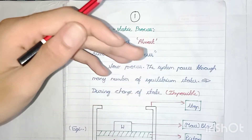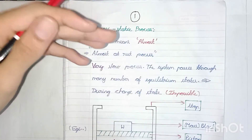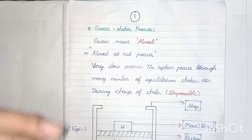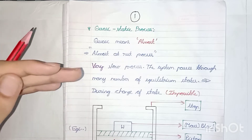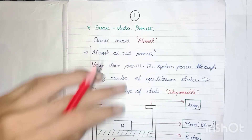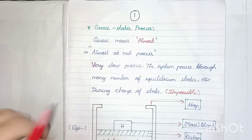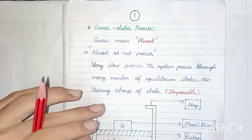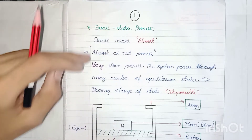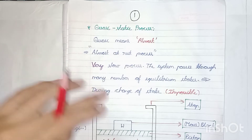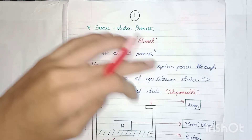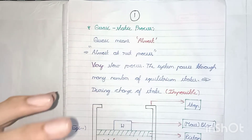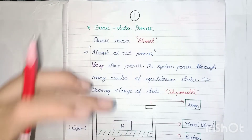Static means at rest. In engineering mechanics you study static and dynamic conditions. So static means at rest or stationary position. If you join both meanings together: 'almost at rest process.' From this we understand it is nothing but a very slow process.